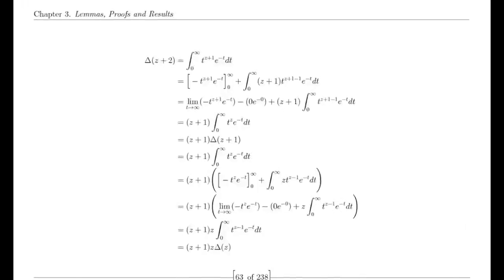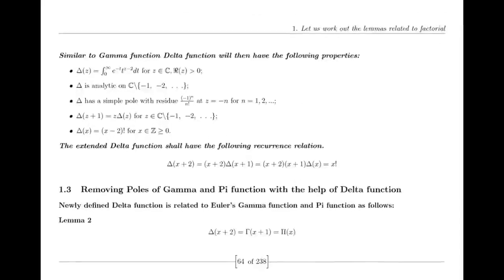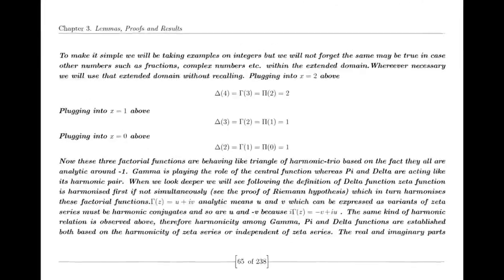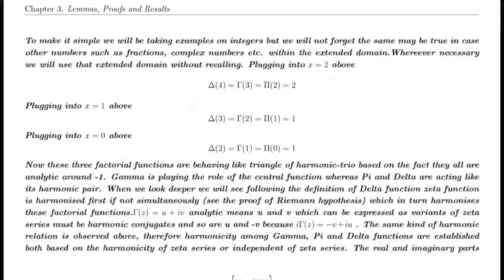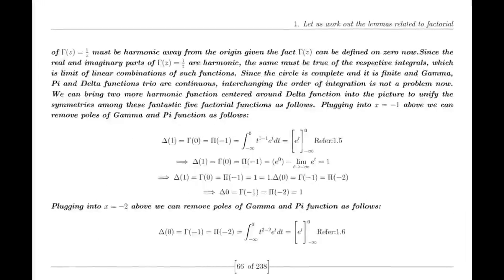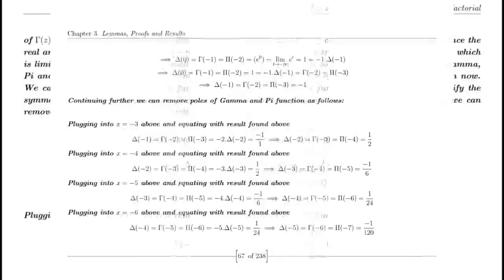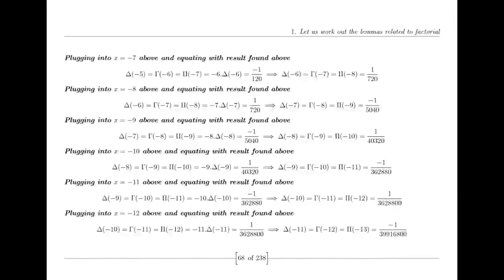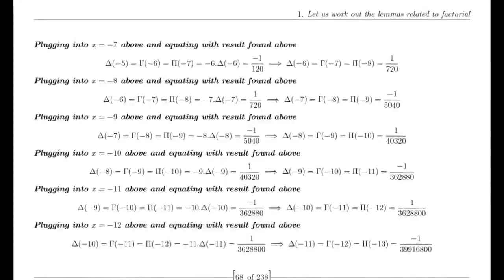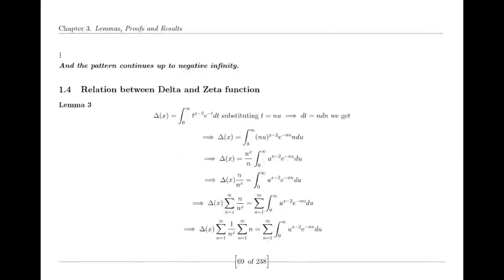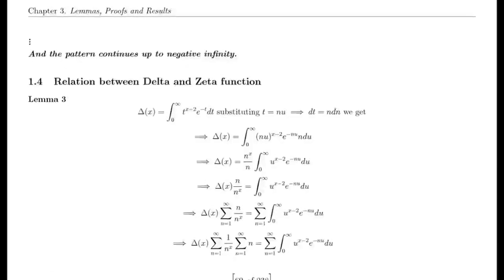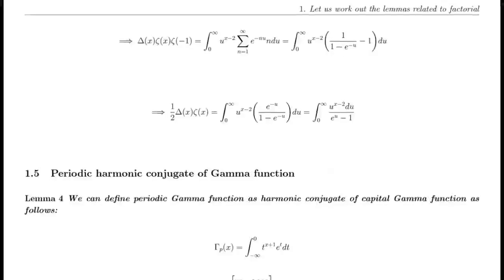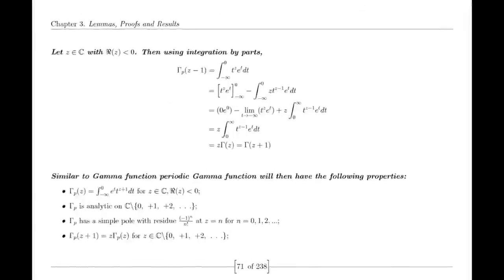The decimal system took birth and flourished in the Indian subcontinent before spreading to other parts of the world. The Leibniz series for π was actually discovered by the Indian mathematician Madhava of Sangamagrama. Aryabhata provided a significantly accurate value of π long before Archimedes, and had insights into gravity long before Newton. Long before Pythagoras, Baudhayana wrote about the same theorem in poetic verse. Infinite series and calculus were used in ancient India well before their formal development in Europe, and the concept of the relativity of time was known to Indians since antiquity.